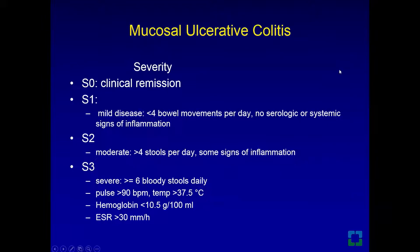Mild disease: fewer than four bowel movements per day, no serologic or systemic signs of inflammation. Moderate: more than four but fewer than six, with some signs of inflammation. Severe: bloody stool, more than six per day, with tachycardia, low-grade temperature, low hemoglobin, and increasing ESR. Beyond that is toxic or fulminant colitis, and when associated with a dilated colon, it is called toxic megacolon.